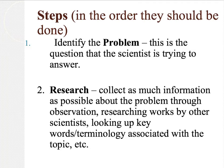Now we're going to go through the steps of the scientific method in the order they should be done. The first thing you're going to do is identify your problem — this is the question you're trying to answer. After that, you're going to do some research, collecting as much information as possible about the problem through observations and looking at what other scientists have done.